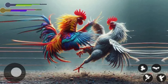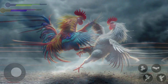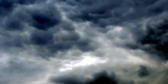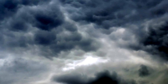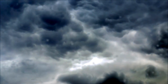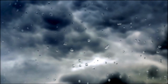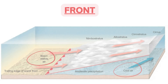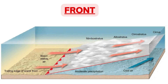When two air masses fight, weather changes like clouding, turbulence, precipitation, change in temperature, pressure, visibility, etc., will happen near the frontal surface. A front is a surface of interaction between two air masses of different temperature.